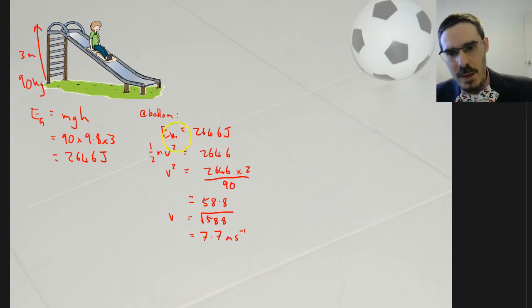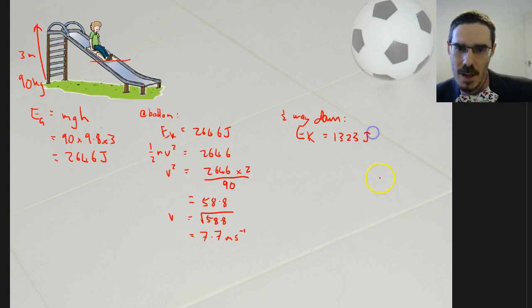But here's the thing. Kinetic energy goes with the square of the velocity. So what happens if I look halfway down? The interesting thing is it's not going to be half of this speed because energy goes with the square of the velocity. Watch what happens. Halfway down, the potential energy is now half of this and half of that energy has now been turned into kinetic energy. So the kinetic energy is now 1,323 joules, half of what we had before.